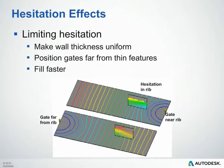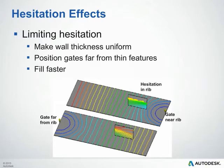Another thing to be aware of are areas in the part that could cause hesitation effects. Hesitation is an unintended slowing down of the flow front. When the flow front slows down too much, it gets cold and in severe cases can even freeze off, as shown in the top image. Hesitation will occur when there is a large variation in wall thickness within the part — in this case, the rib is much thinner than the nominal wall. Having a fast injection time can minimize hesitation, as it increases shear heating and provides less time for the material to hesitate. Another way to reduce hesitation is to gate as far as possible from thinner areas, as shown in the bottom image.